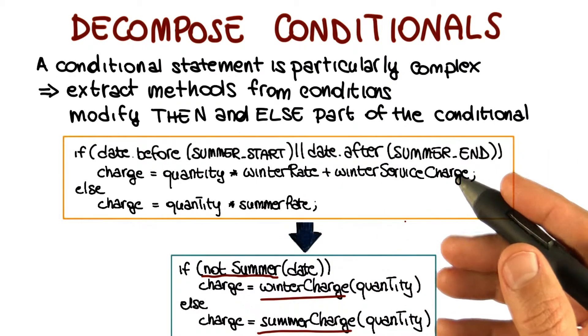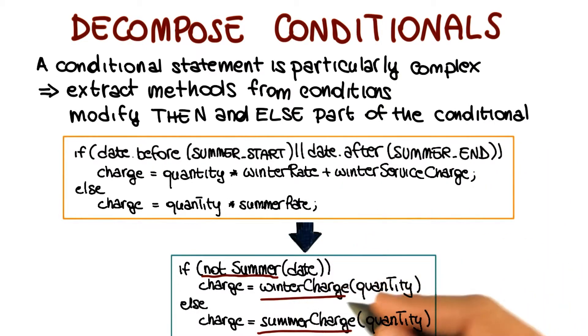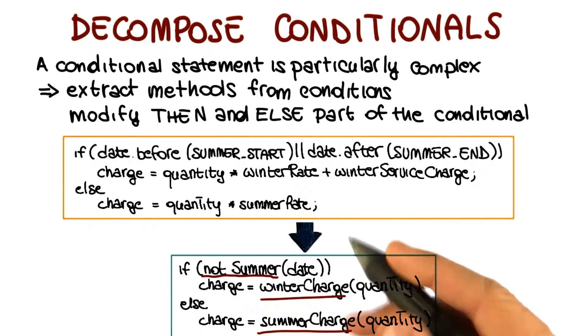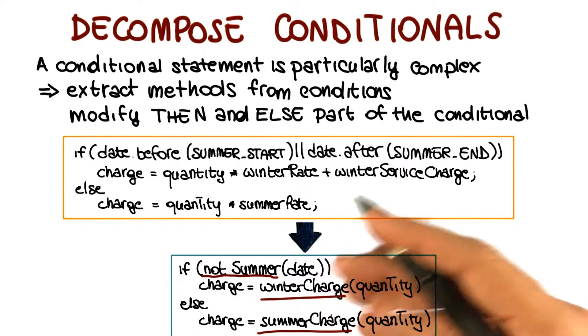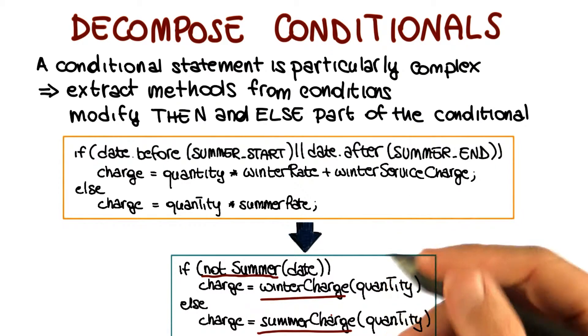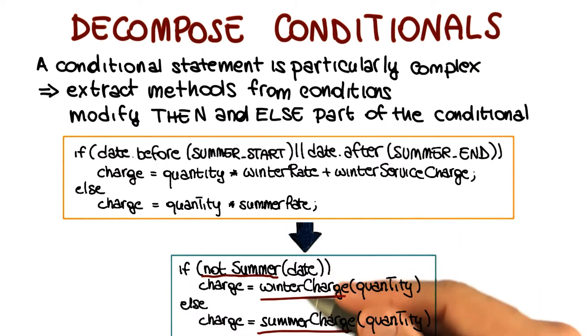And if I need to look at the details, exactly like in the previous case, I can just go and look at the implementation of winter charge and summer charge. But I will be looking at that in its specific context, so without having to understand everything at once. So in this way, you make it clear both why you're doing something, because it's not summer, and what exactly you're doing. You're computing a winter charge or a summer charge.